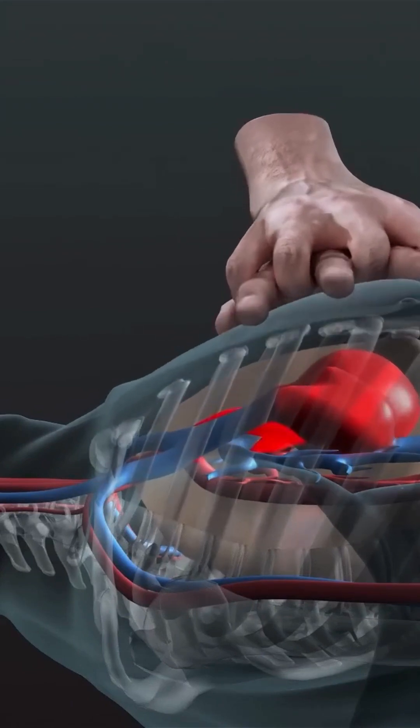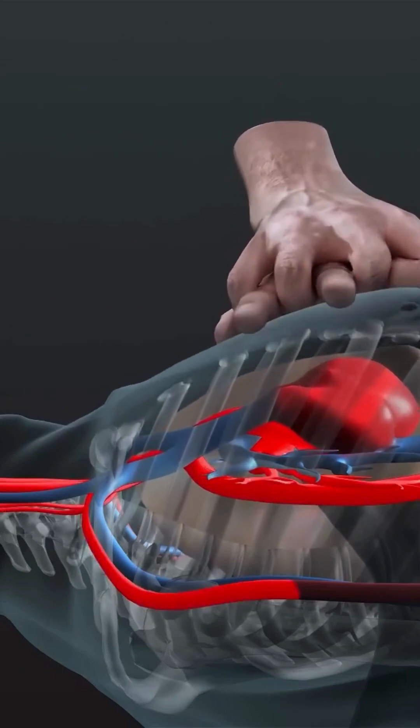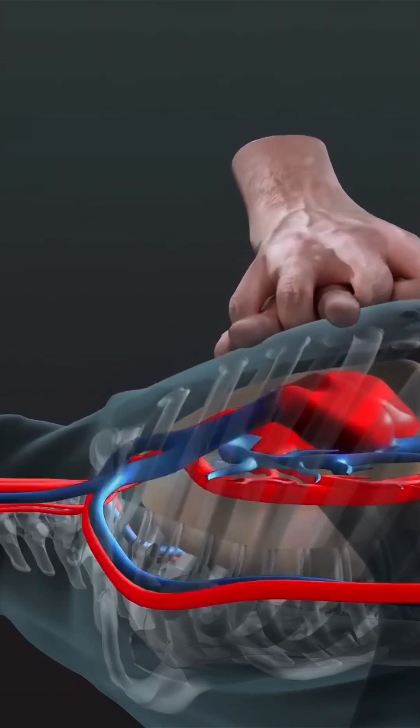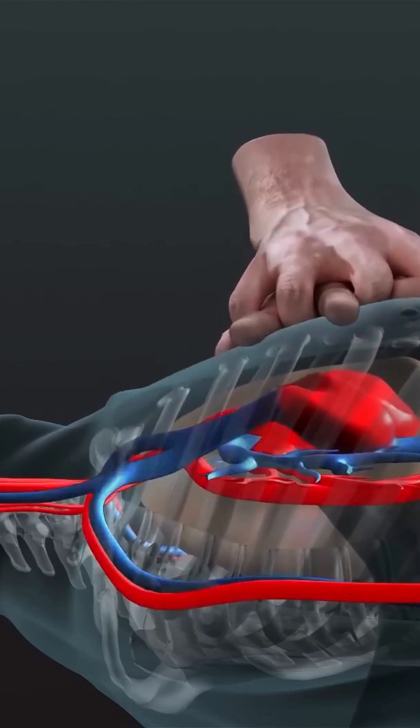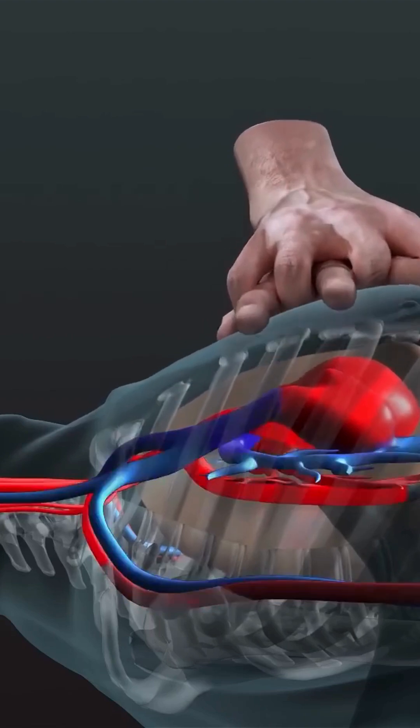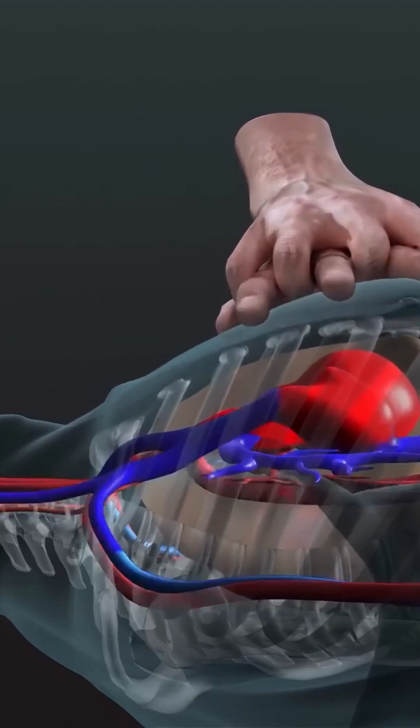Push hard, at least two inches deep. Push fast, 100 to 120 compressions per minute. Every press sends oxygen-rich blood to the brain, keeps the heart alive, buys time until help arrives.